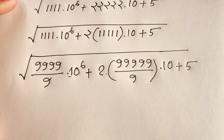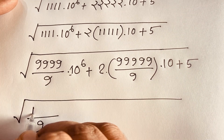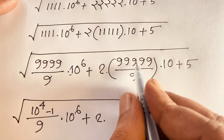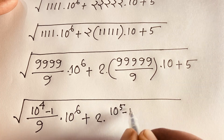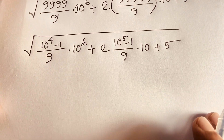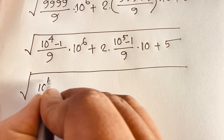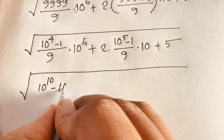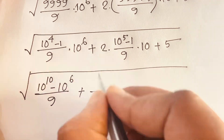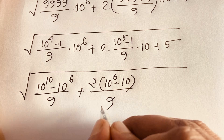Now under the square root, this value will be here is 9 — it will be (10 to the power 4 minus 1) times 10 to the power 6, plus 2 times and you can see it will be (10 to the power 5 minus 1) divided by 9, and here times 10 plus 5. Expanding: this times this will be 10 to the power 10, minus 10 to the power 6 over 9, plus 2 times 10 to the power 6 over 9, minus 10 over 9 plus 5.